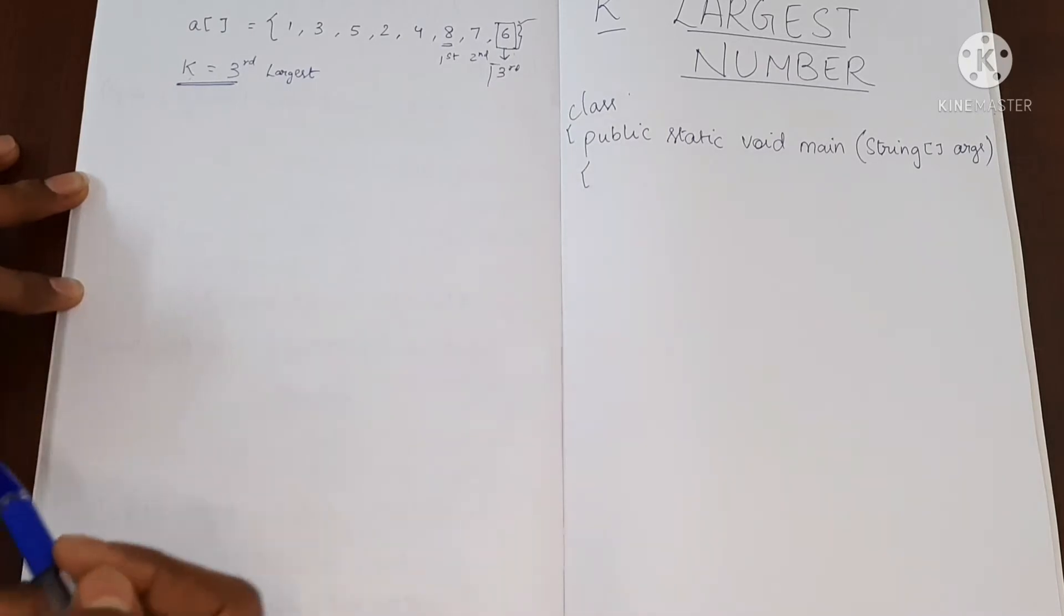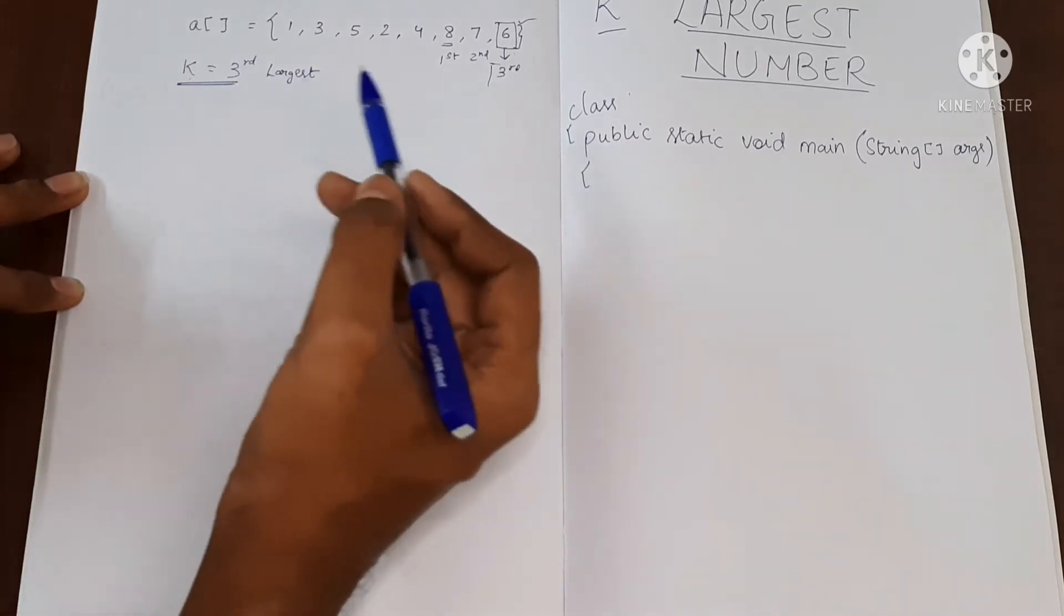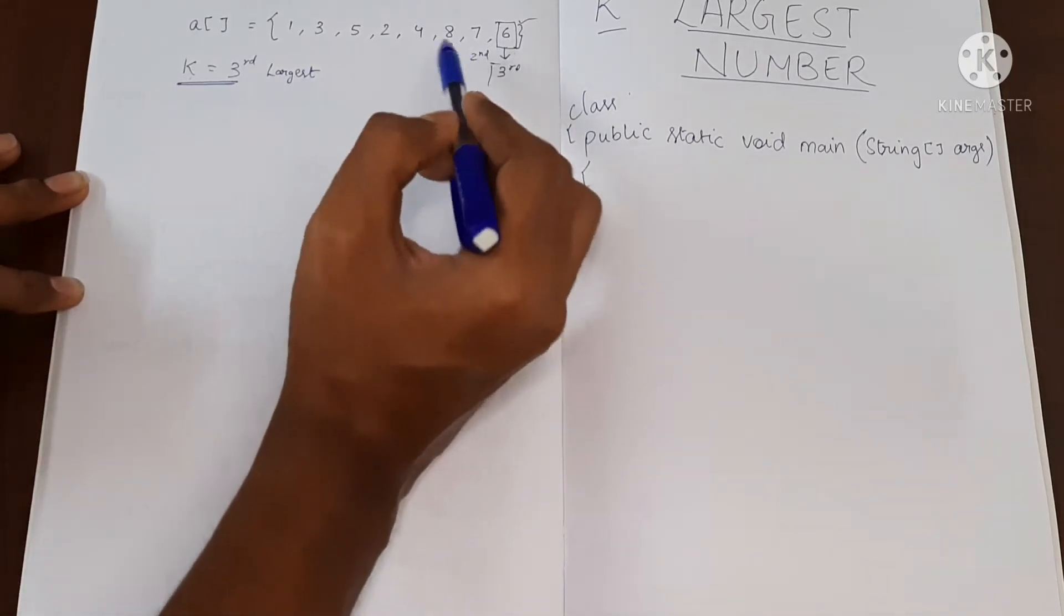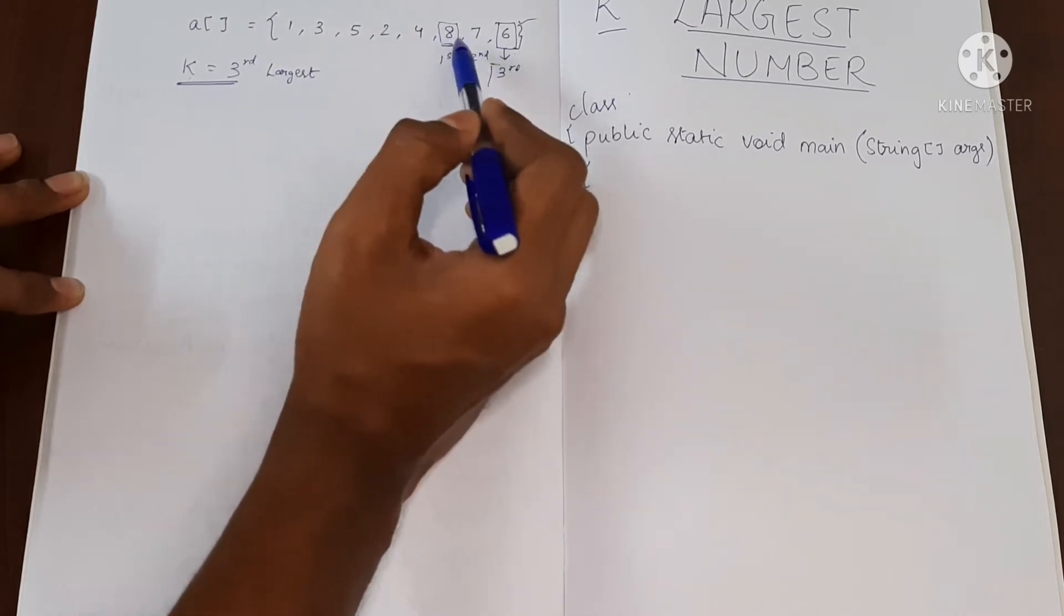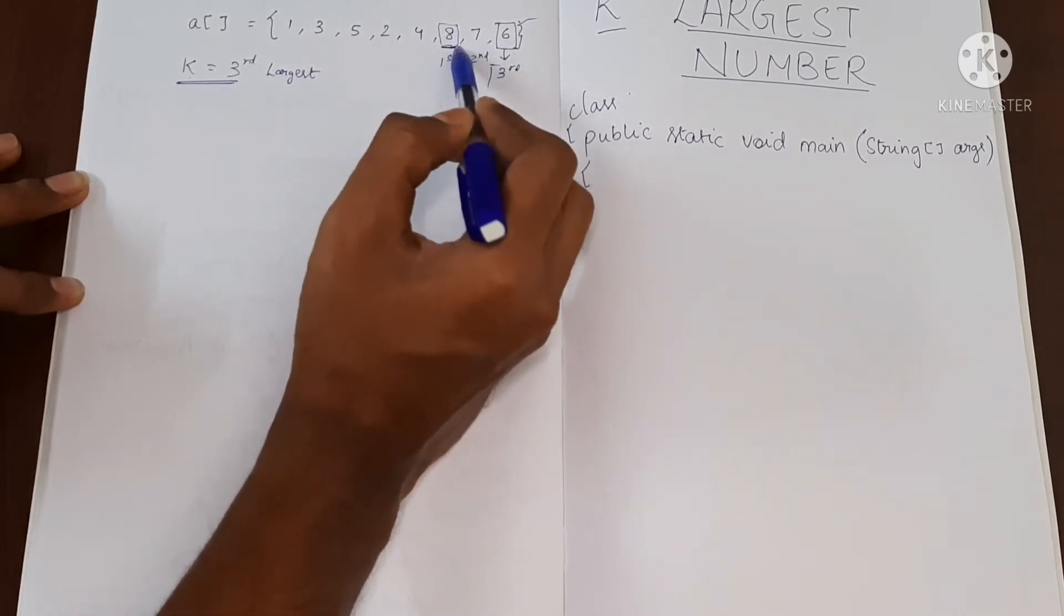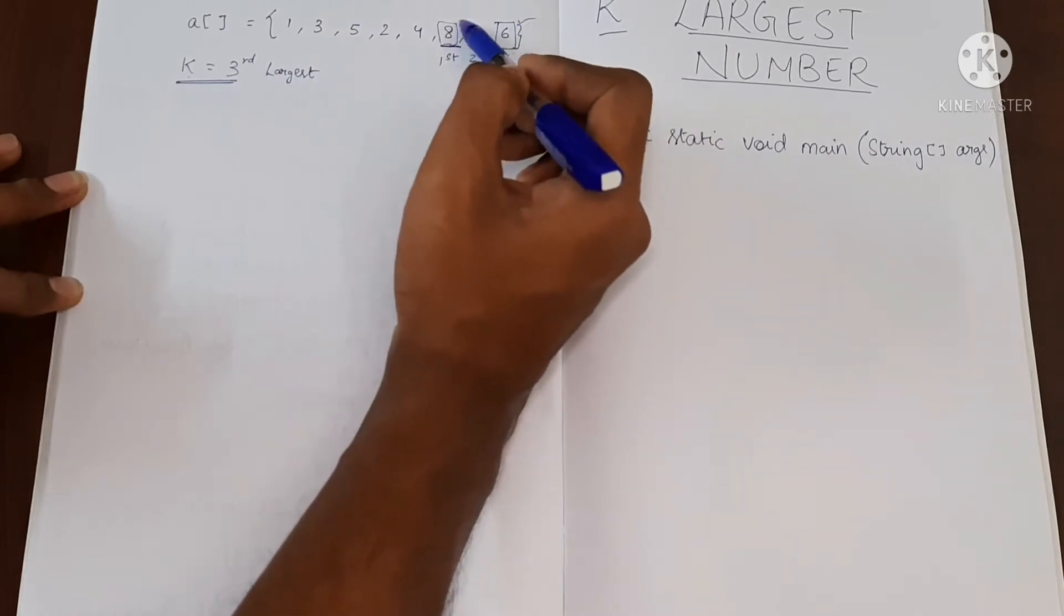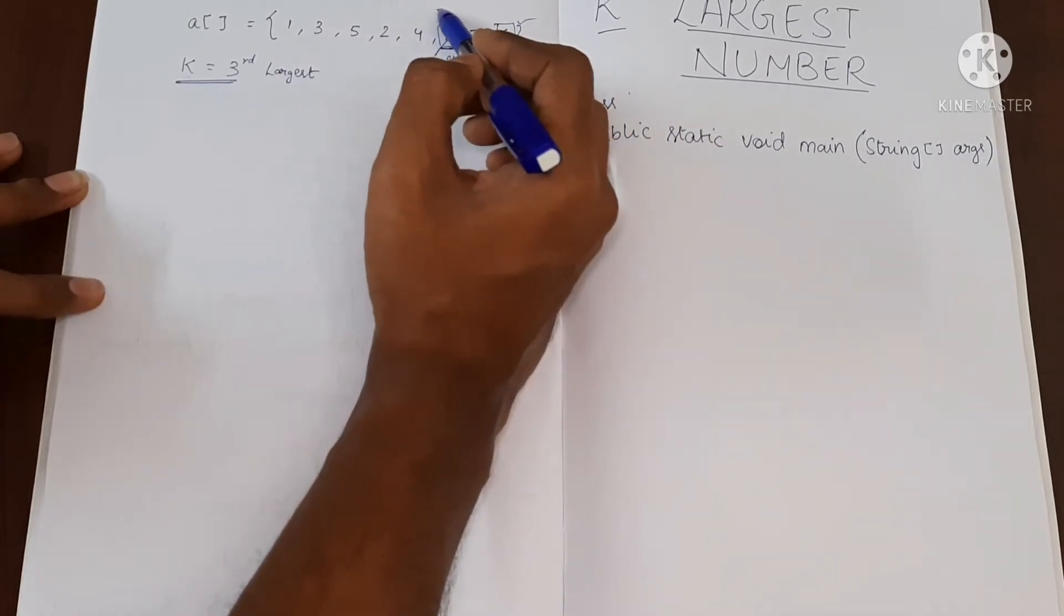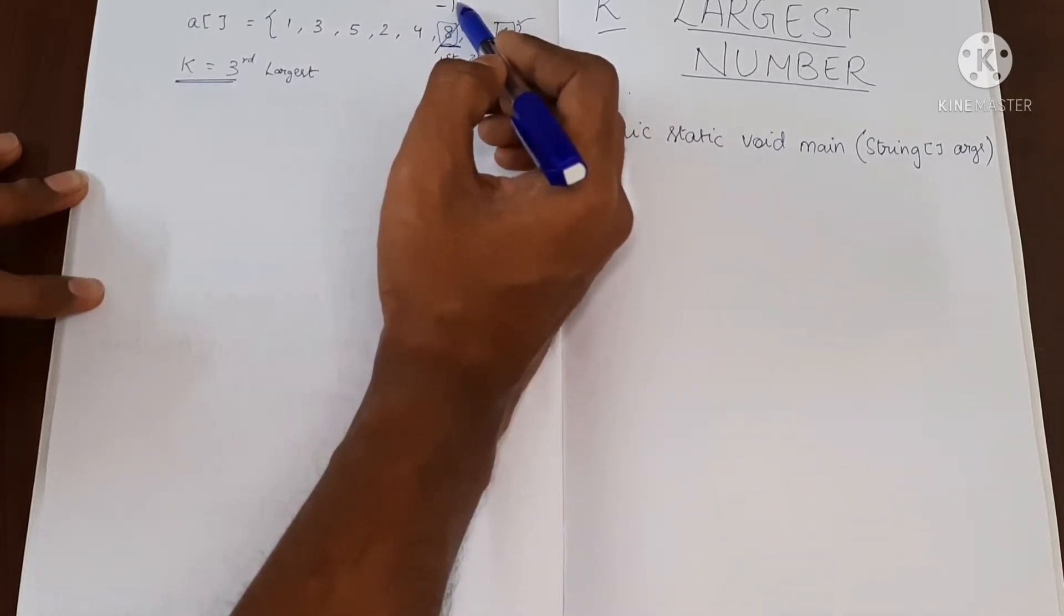So how do we do this? The logic is simple. We are going to find the largest value three times. First we'll find the largest value, then we will make it into some other value, let's say for example, minus 1.